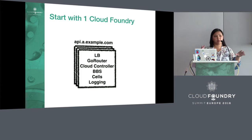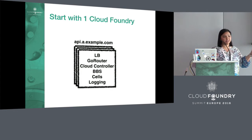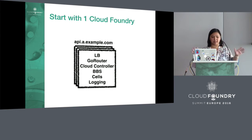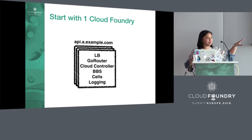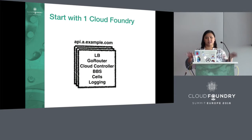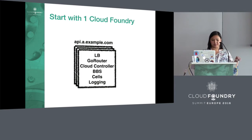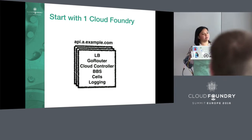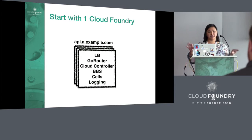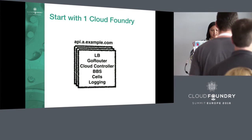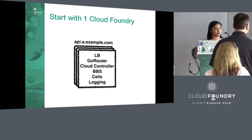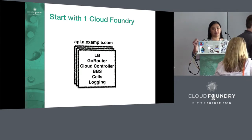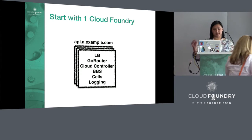I'd like to frame the problem we're trying to solve. A lot of you out there might start with one Cloud Foundry, and that's great. It might look a lot like this, although this doesn't really mention the data stores or all the other components required for coordination. You may have even striped them across three AZs for availability, and as more apps come to the platform, you can just scale the appropriate tier, whether it's the routers or the cells or the logging tier.